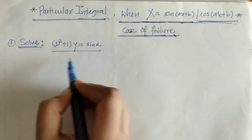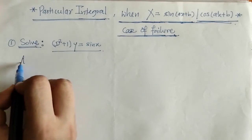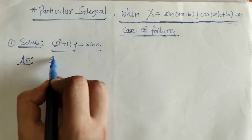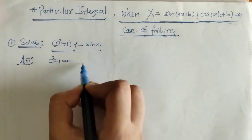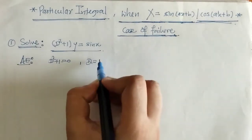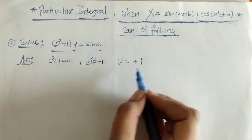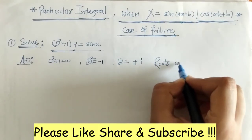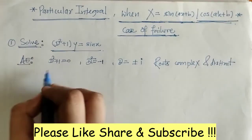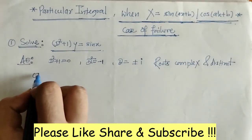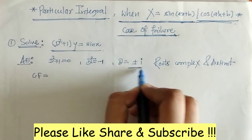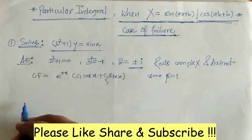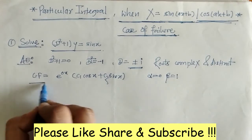Here we have the given differential equation. We can find the CF by taking the auxiliary equation. We got roots which are complex. So now we can find CF. These are the roots, and yes this is the CF.